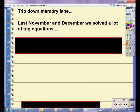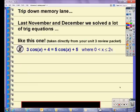So to begin, we're going to take a trip down memory lane. Last November and December we solved a lot of trig equations, like this one taken directly from your Unit 3 review packet. We are solving 3cos(x) + 4 = 5cos(x) + 5 where 0 < x ≤ 2π, not including 0, so that cannot be our answer.